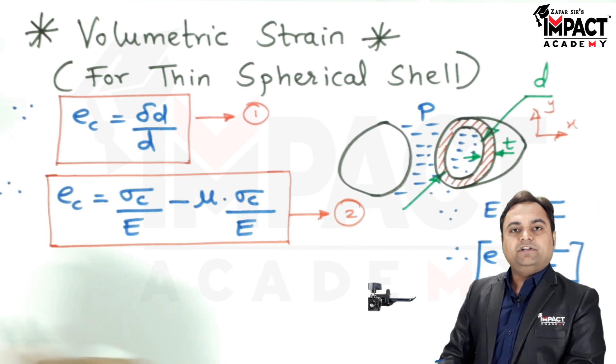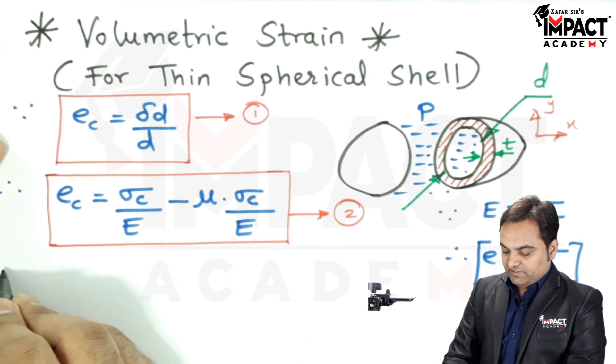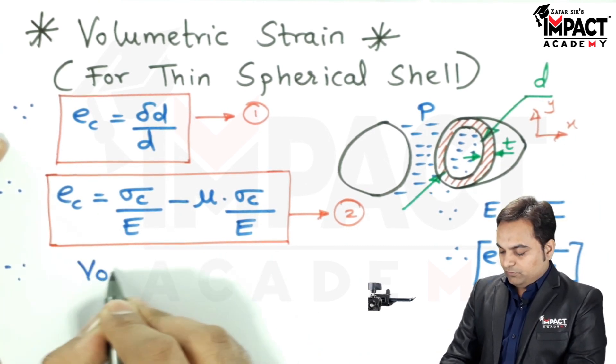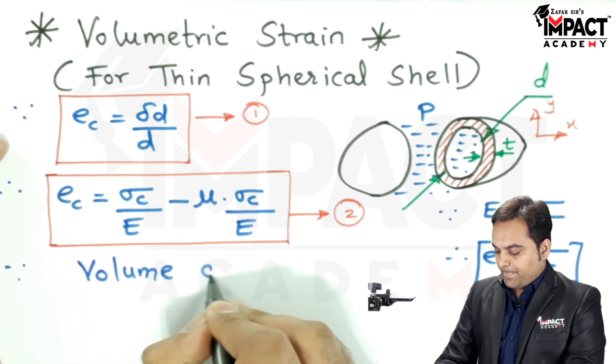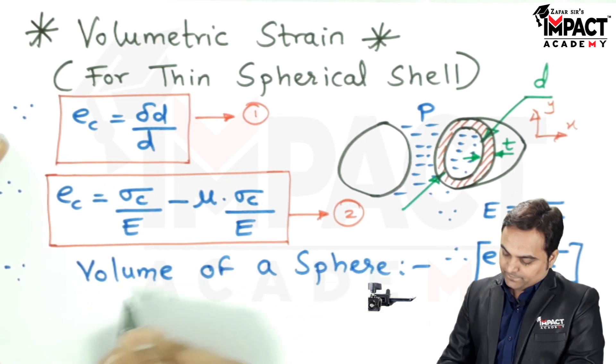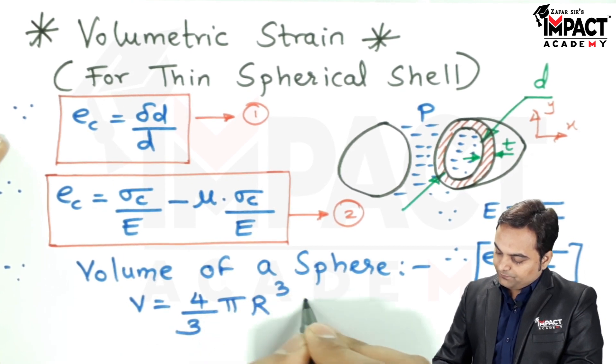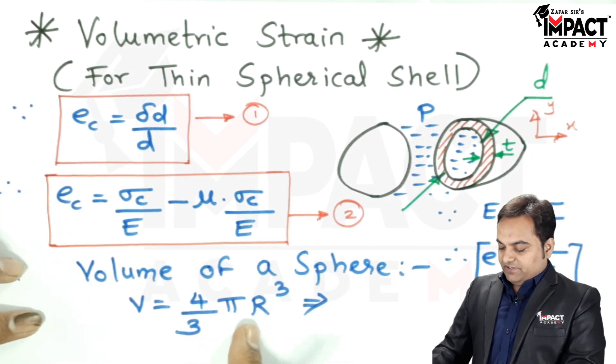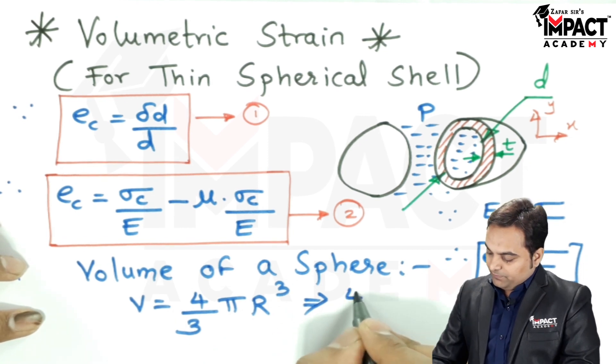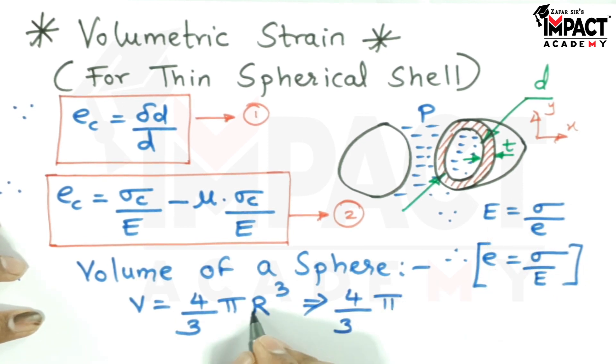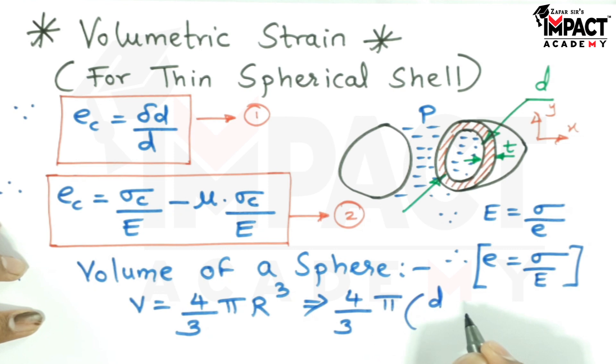Next, in order to get the volumetric strain, first I will write down that since the volume of the sphere is given by 4 upon 3, Pi R cube. If I replace the radius with the diameter, then it will be radius is half of diameter, which is D.